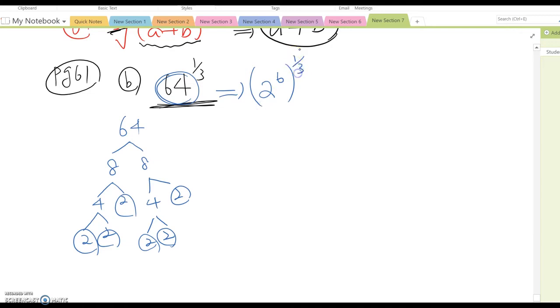Now you know that the property a to the m to the n equals a to the mn. Therefore, this becomes 2 to the 6 times 1/3, so it is going to be 2 to the 6 over 3, which means 2 to the square power, so the answer becomes 4.